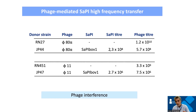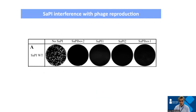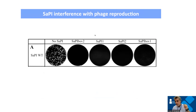That means S. aureus strains can exchange these elements very easily. This is promoted by antibiotic treatment — when we treat patients that have phages and SaPIs, we are promoting this variability and this transfer. It's also important for phage therapy: these islands, because they are phage parasites, block phage infection. So phage strategies need to account for the fact that cells with SaPIs will block the phage, preventing it from killing the cells.